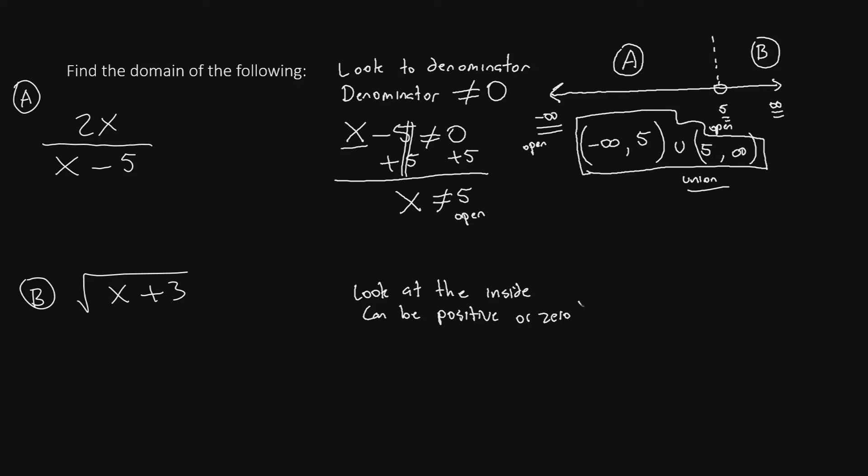To write this, we say greater than or equal to 0. So, let's look to the inside. It says x plus 3. And we'll say that must be either greater than or equal to 0, because it can't be negative, because square root of a negative number is not a real number. Now, to solve, let's get x by itself. Subtract 3 from both sides. Now, the 3s cancel, and we'll have x is greater than or equal to negative 3.